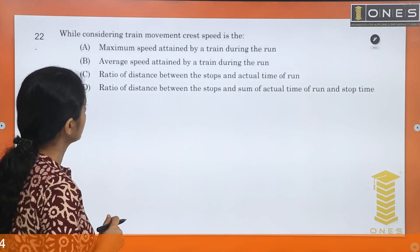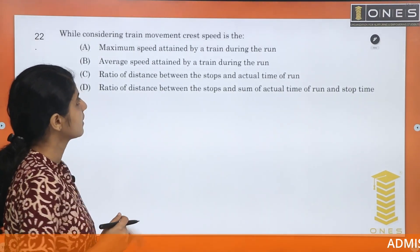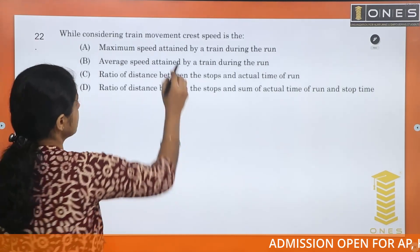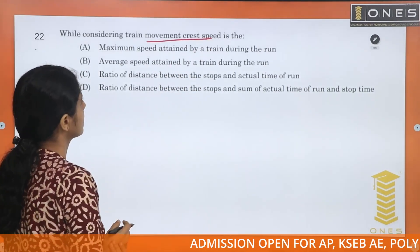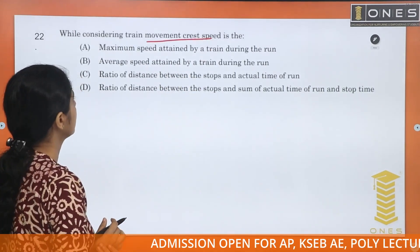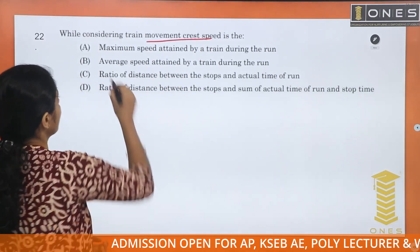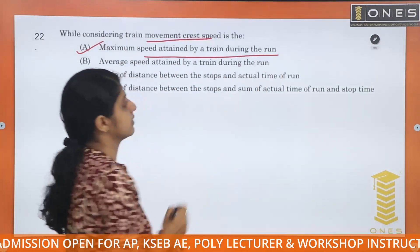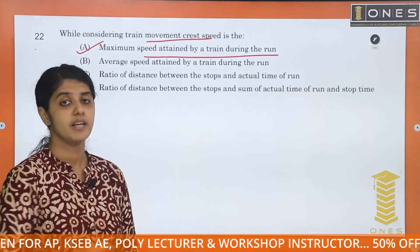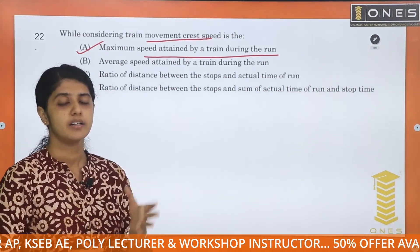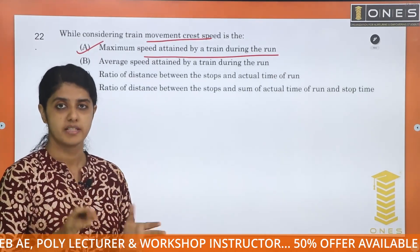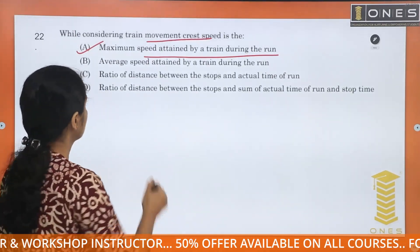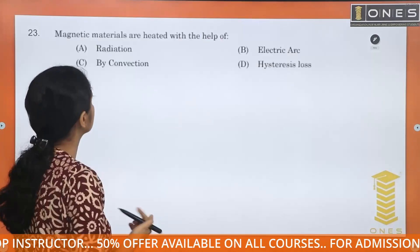While considering train movement, what is the crust speed? It is the maximum speed attained by the train during the run. During the running time, the train achieves the maximum speed, which is the crust speed. So the answer is option A.